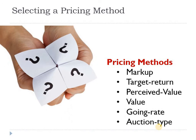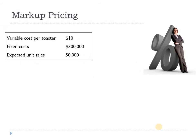Having known all those things, you can talk of pricing methods. There are six pricing methods: markup pricing, target return, perceived value, value pricing, going rate, and auction type. Let us talk about them one by one — it is simple math, no rocket science, and we should be able to get it on first look.